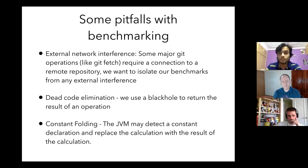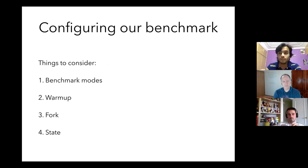Constant folding is when the JVM declares constants and replaces a calculation with its result — I don't want that either. JMH provides another feature for that called a state static class, and I'll describe that with my code. Then configuring benchmarks: there are things like benchmark mode, warm-up, and number of forks — I'll explain all of that with my code.